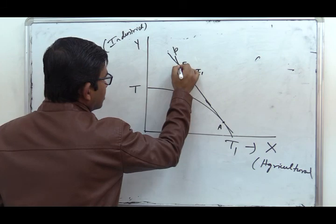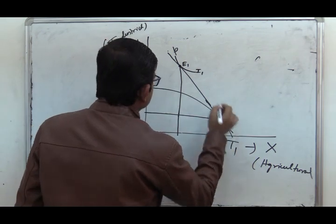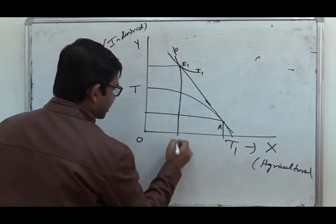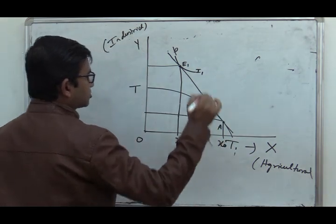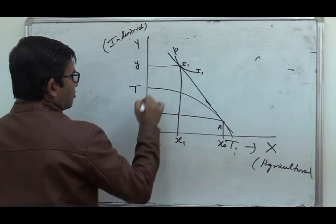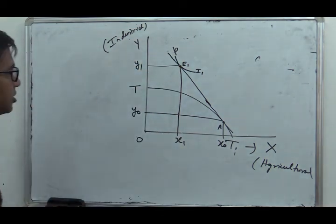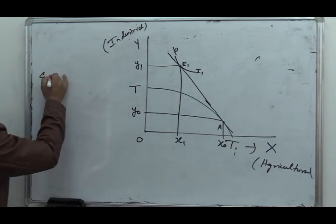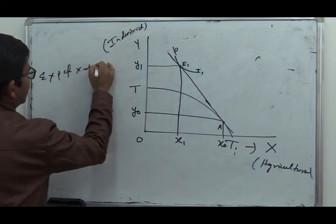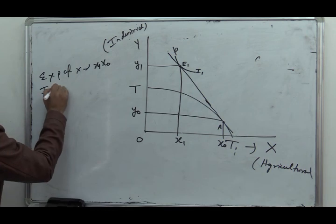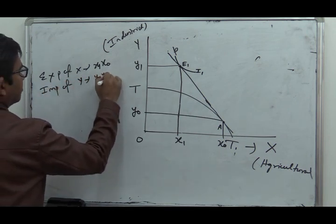At this initial equilibrium, the country is producing OX0 of X and OY0 of Y, while consuming OX1 of X and OY1 of Y. Therefore, the export of X is X1X0 and the import of Y is Y0Y1.